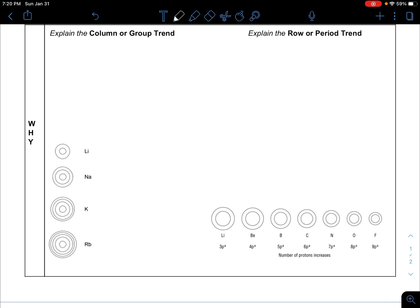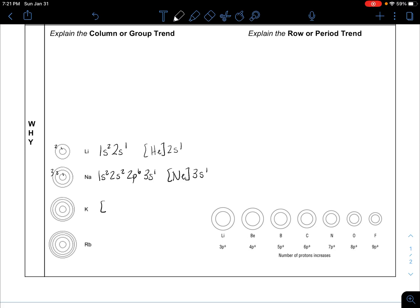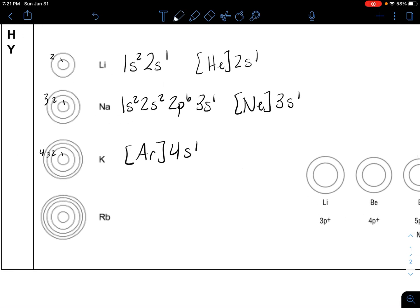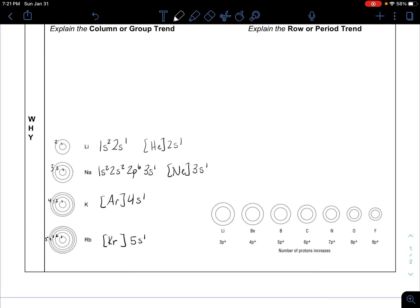Why do they tend to get larger as you descend a column? The easy thing to do is just go back to electron configuration. 1s2 2s1 is lithium's electron configuration. Sodium is 1s2 2s2 2p6 3s1 or neon 3s1 with three energy levels. Potassium has four energy levels and rubidium starts with krypton 5s1 with five energy levels.